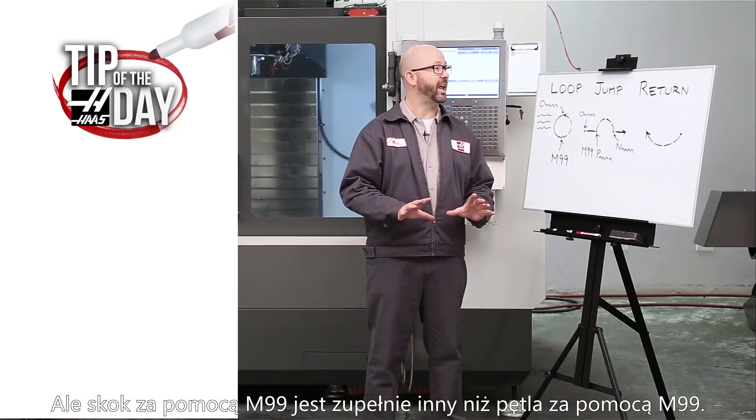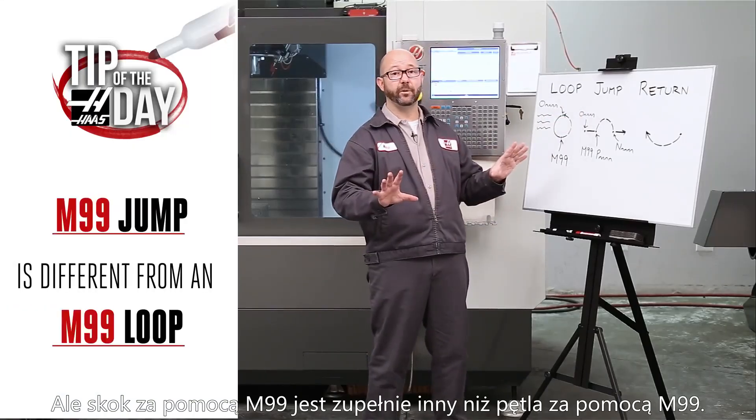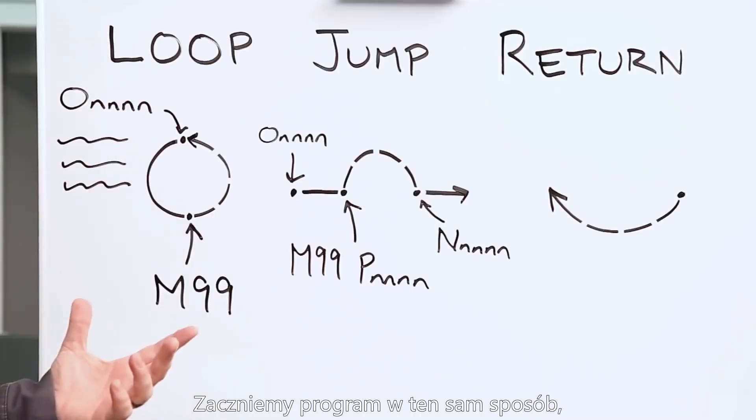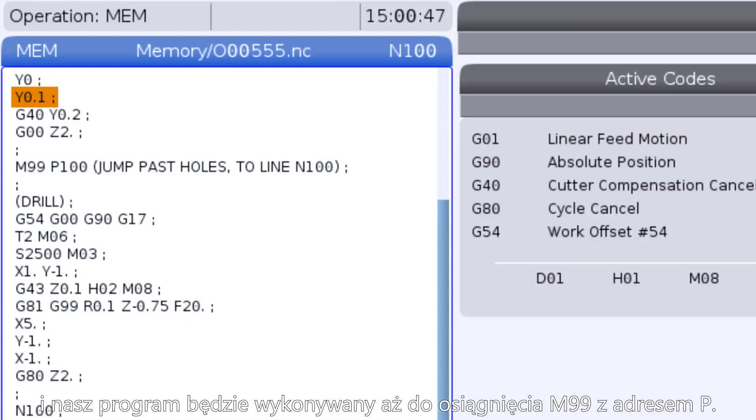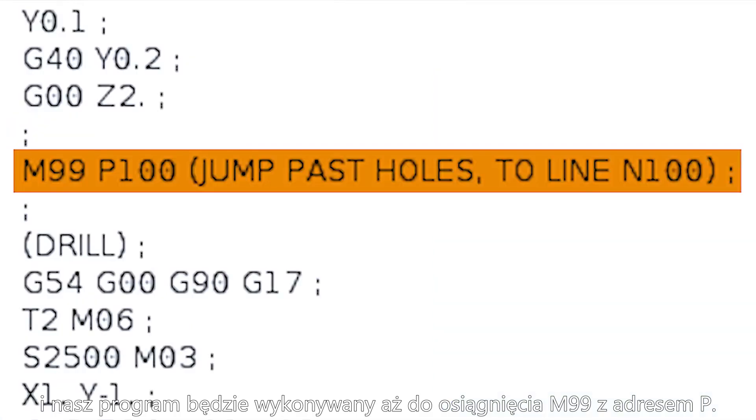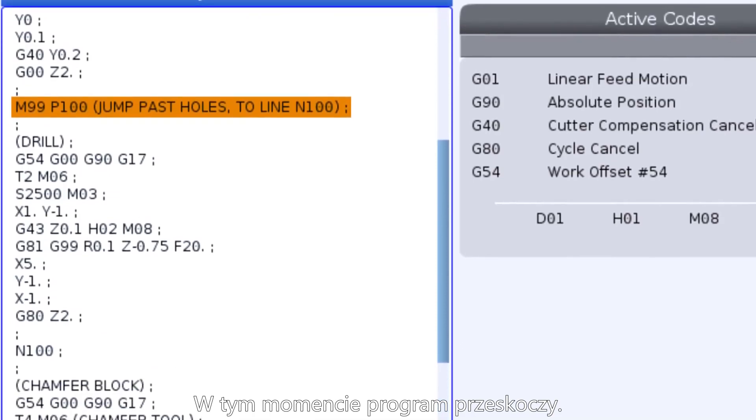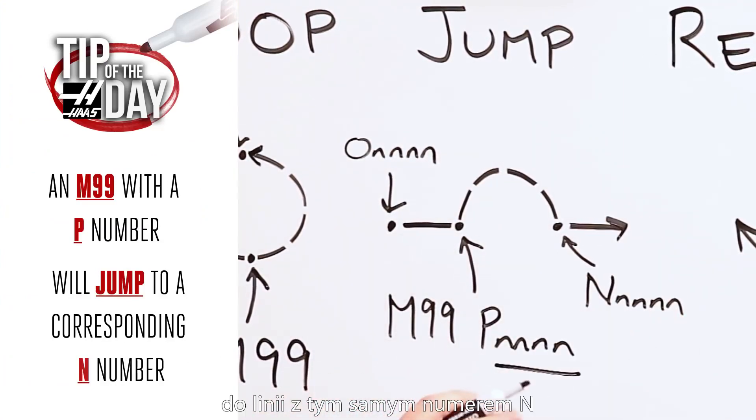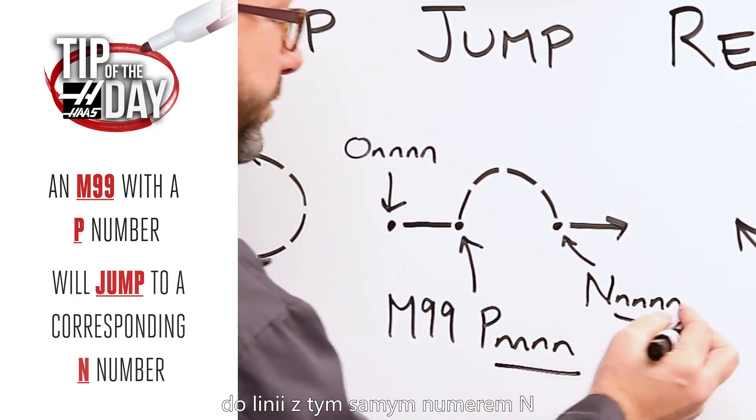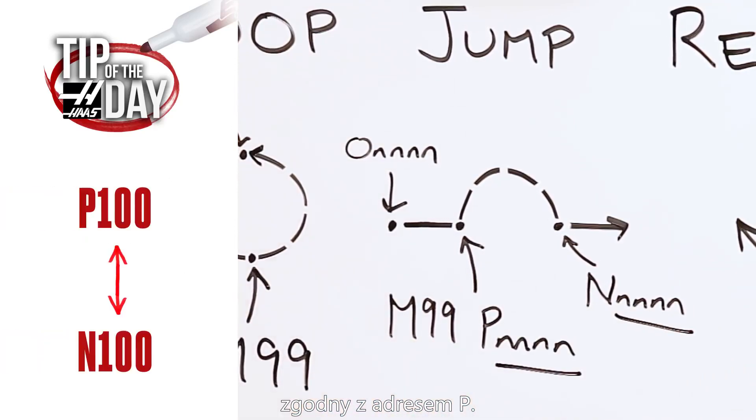An M99 jump is very different from an M99 loop. We'll start our program in the same way from our O number, press cycle start. Our code will run until we reach an M99 with a P number. At this point, our program is going to jump. An M99 with a P value will cause us to jump to a line in that same program with an N number that corresponds with our P number.